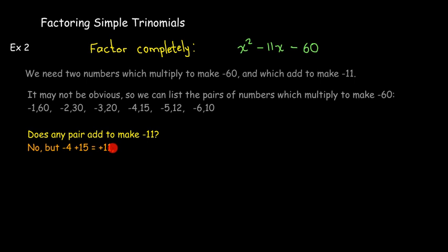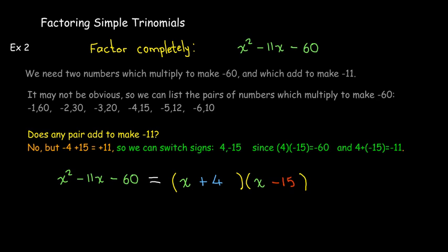That's all the information I need, because I can swap the signs and deal with positive 4 and negative 15. That will still multiply to make negative 60, but now it adds to make negative 11. So the two numbers I should use are positive 4 and negative 15.